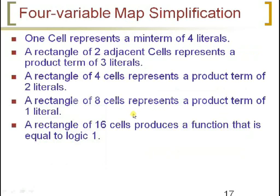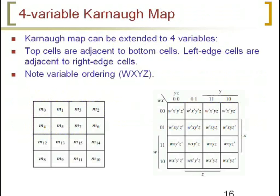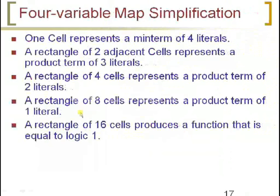A rectangle of 2 adjacent cells represents a product term of 3 literals. If grouping 2 adjacent cells, you get only 3 literals. A rectangle of 4 cells represents a product term of 2 literals. A rectangle of 8 cells represents a product term of 1 literal, so grouping 8 cells gives a resultant expression of 1 literal.